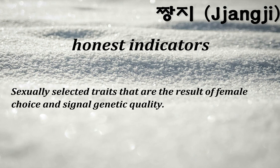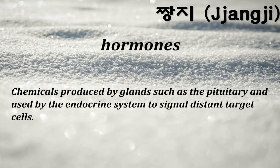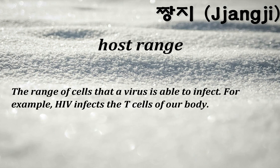Honest indicators: sexually selected traits that are the result of female choice and signal genetic quality. Hormones: chemicals produced by glands such as the pituitary and used by the endocrine system to signal distant target cells. Host range: the range of cells that a virus is able to infect — for example, HIV infects the T-cells of our body.